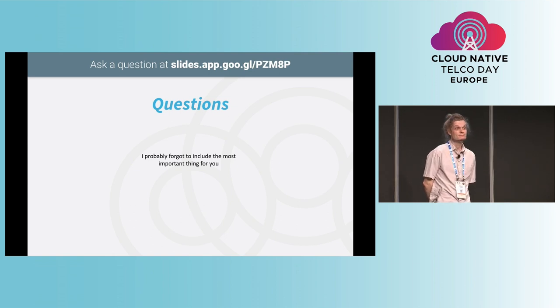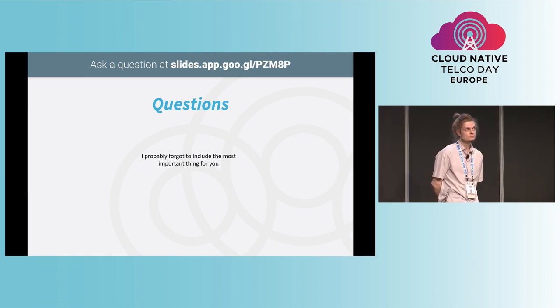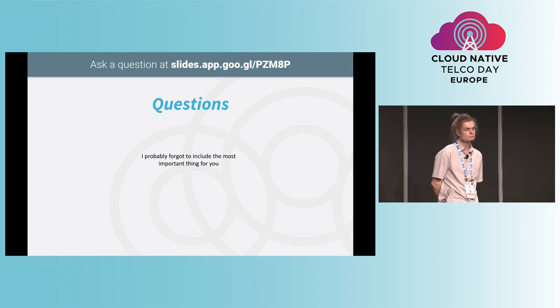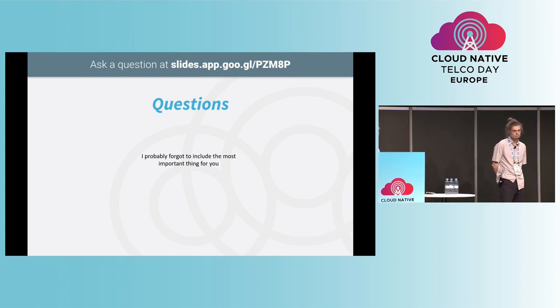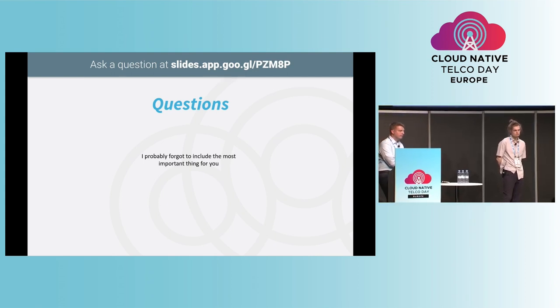First, thanks for a very good presentation. I have two questions, because I think UPF with eBPF is a holy grail of the industry. First: how are you solving things like lawful interception? Second: how are you doing things like header enrichment, DPI, and all that? Because the chaining itself — stripping GTP headers and doing N3 to N6 — is the essence of UPF, but unfortunately we still have a lot of additional functions like HTTP header injection, DPI, and lawful interception. How are you solving those in your software?